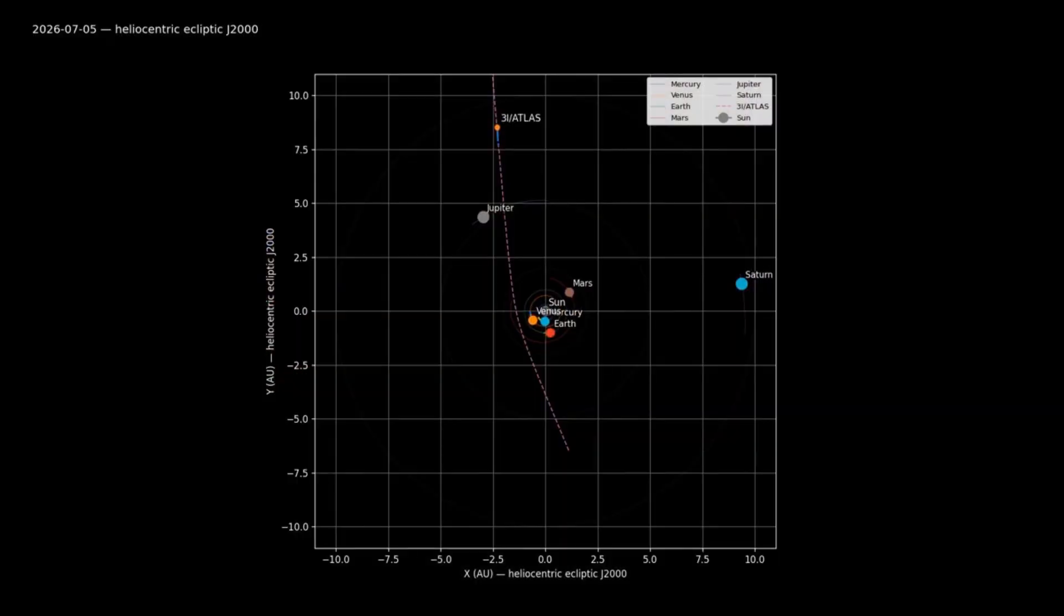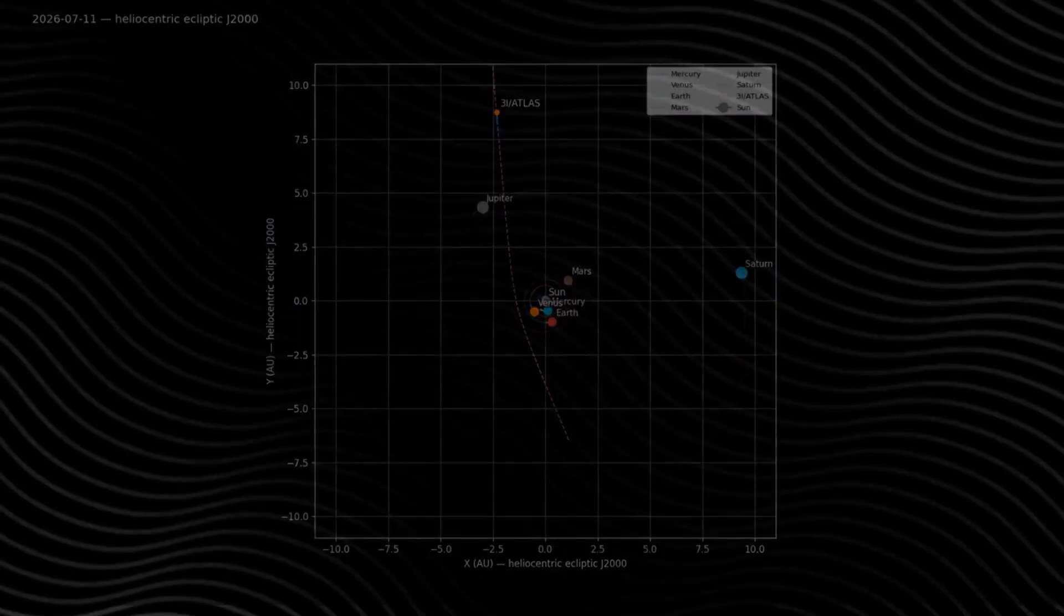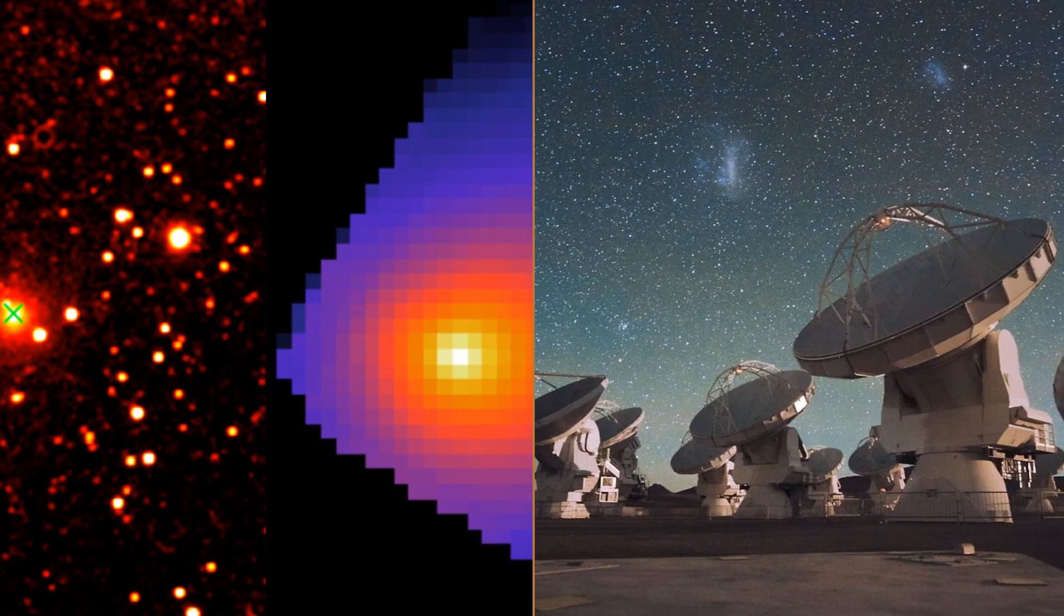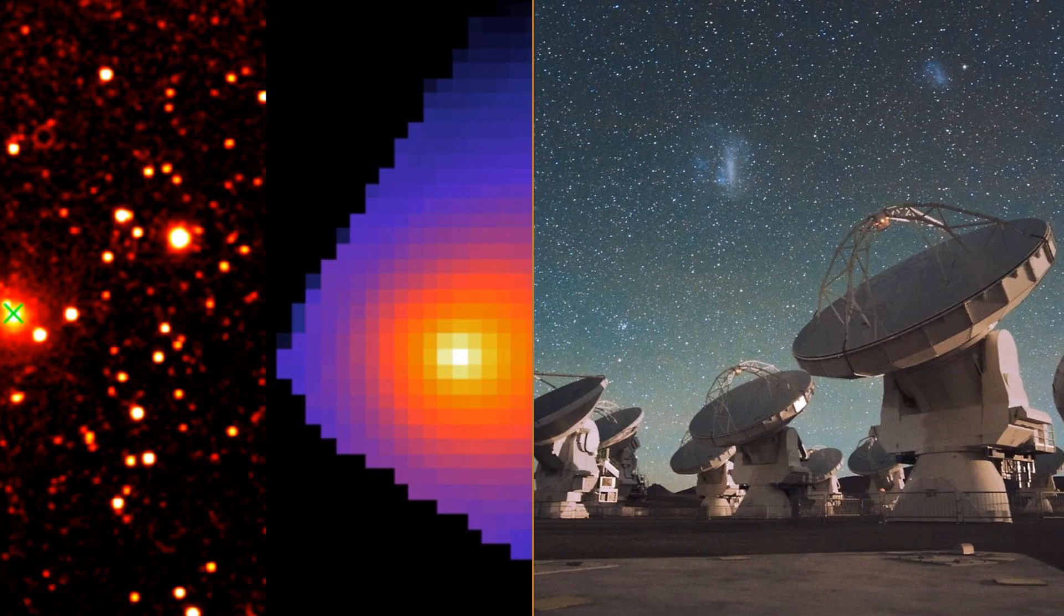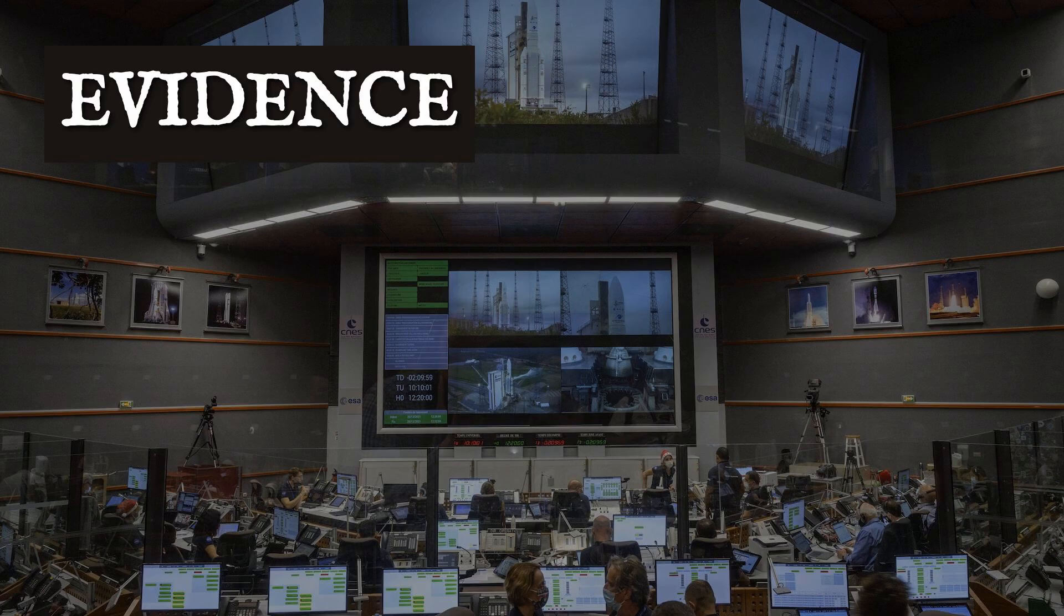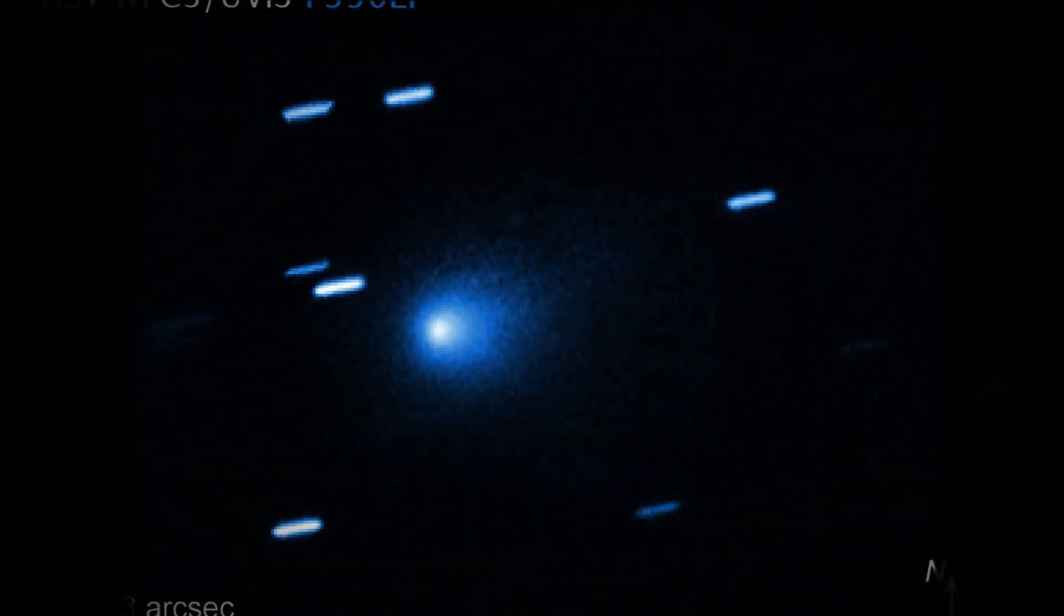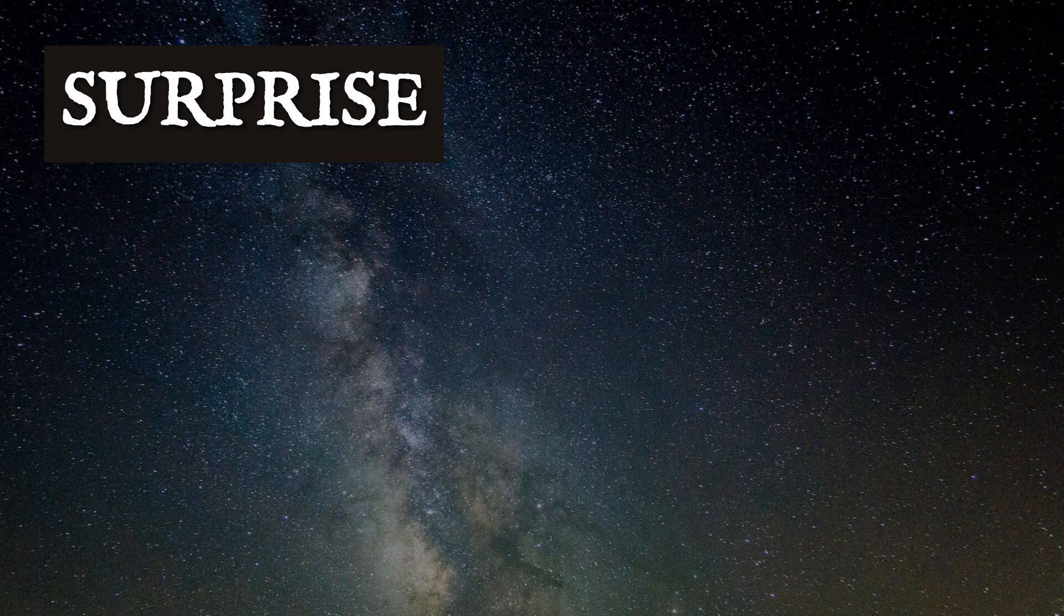As 3i/Atlas continues past perihelion, observatories like JWST and ALMA are collecting new data. What happens next will be decided by evidence, not speculation. For now, the case of the flipping tail stands as a reminder: even in a well-mapped sky, the universe still finds ways to surprise.